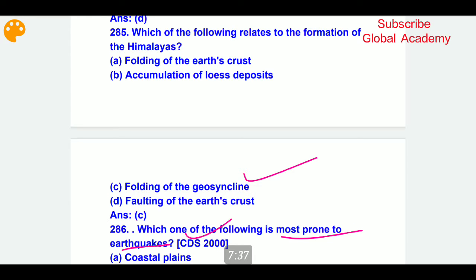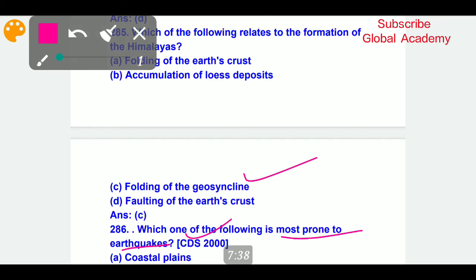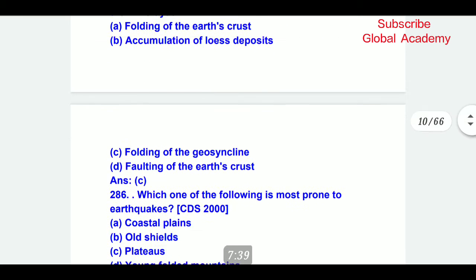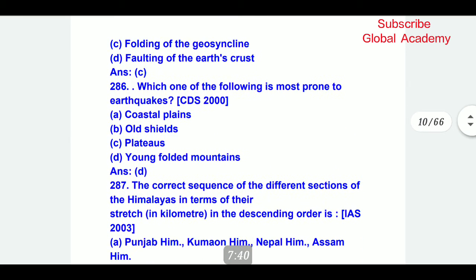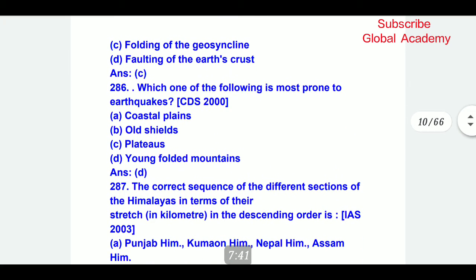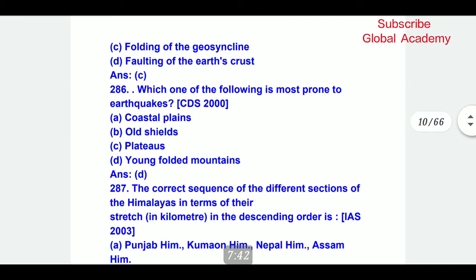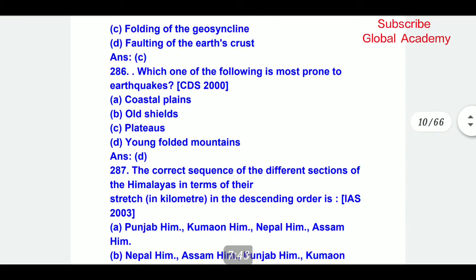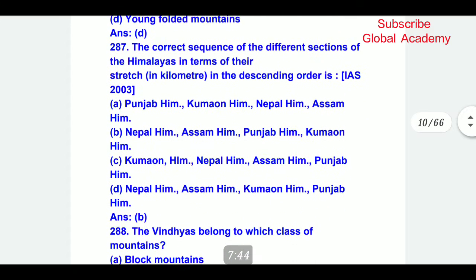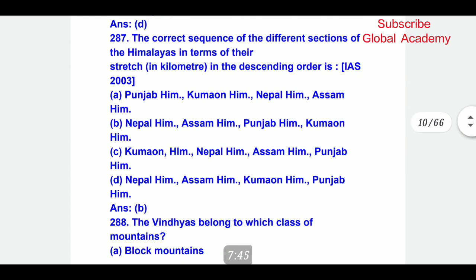Which one of the following is most prone to earthquakes? This is a CDS question from the year 2000. The correct answer is young folded mountains.